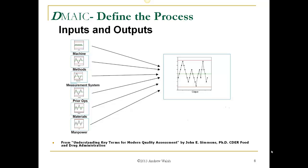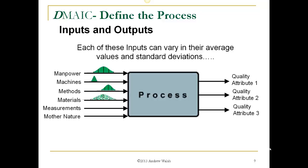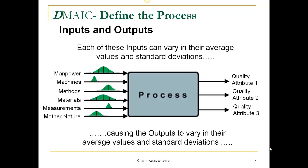There is variability in each one of these inputs, and they all affect the overall variability of the output. This is from a presentation called "Understanding Key Terms for Modern Quality Assessment" by John E. Simmons, PhD, from CDER — the Center for Drug Evaluation and Research of the Food and Drug Administration. The FDA expects us to pay attention to the inputs of our processes. Each of these inputs can vary in their average values and standard deviations, so it's very important to understand the inputs, their variability, and the effect they have on the outputs.